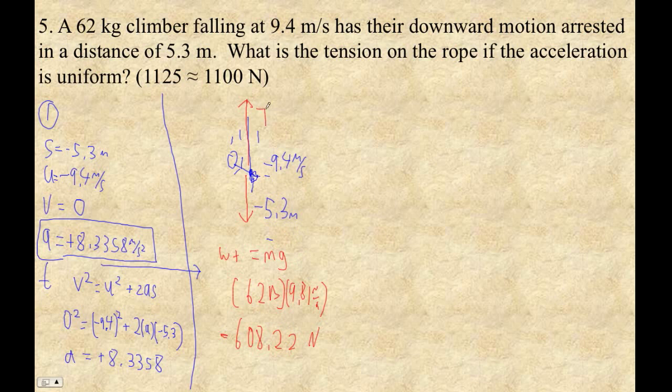The tension is going to be the upward force. And now we're going to just solve F equals ma. All the forces are the unknown tension, which is up. That's the tension in the rope. Minus their weight, so 608.22. And then that equals 62 times our acceleration here, positive 8.3358.